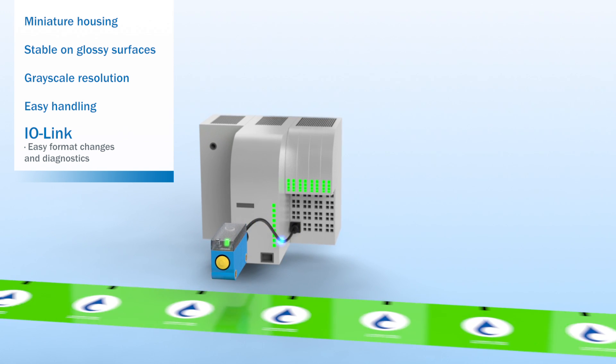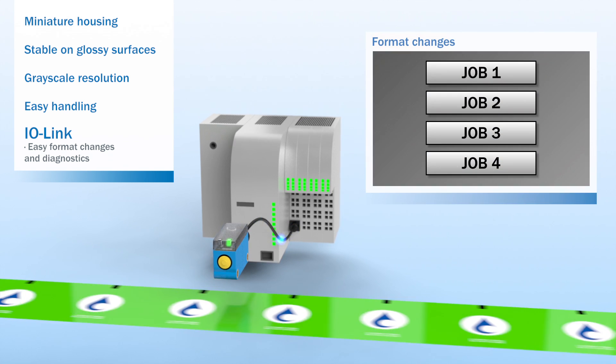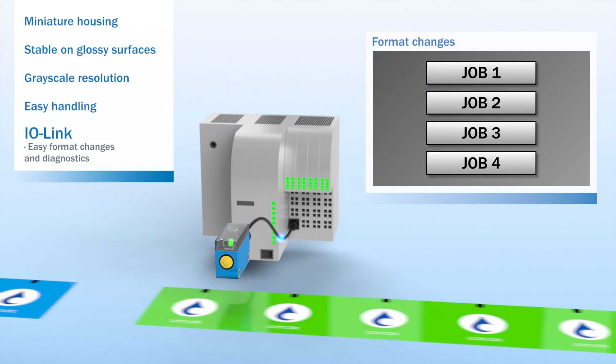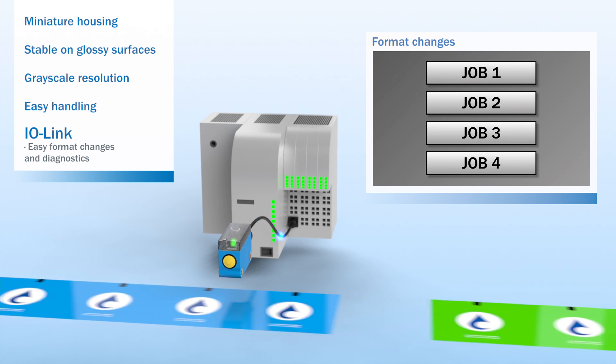Once parameters have been taught, they can be saved in the control system as jobs. Should the format change, the corresponding job is simply recalled.